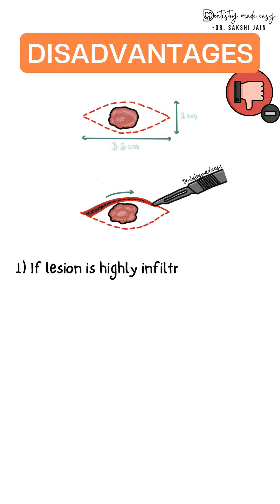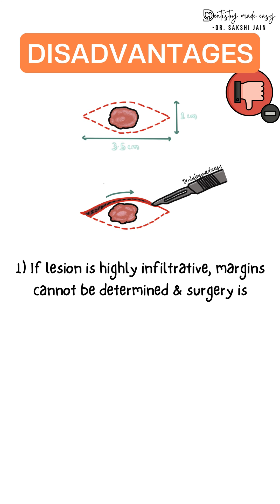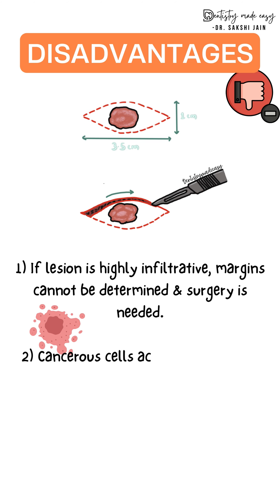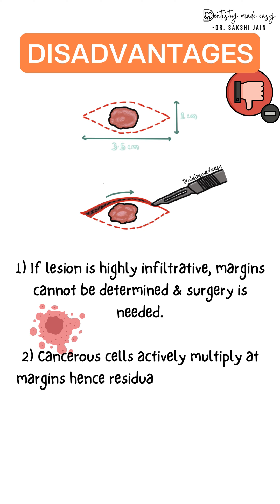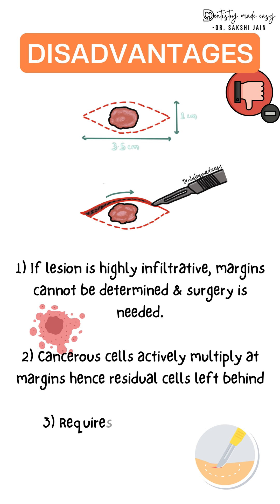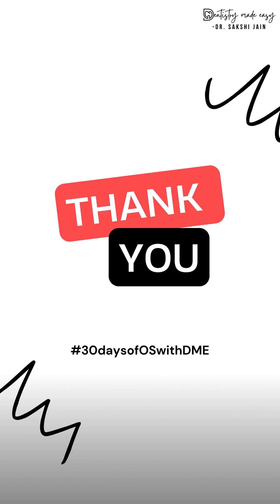The disadvantages are: if the lesion is highly infiltrative, the margins cannot be determined, so only a part of it is removed and a different surgery is required later. Additionally, for cancerous cells that are actively multiplying, there are chances that residual cells are left behind, requiring another surgery. Finally, excisional biopsy requires high skill and precision.